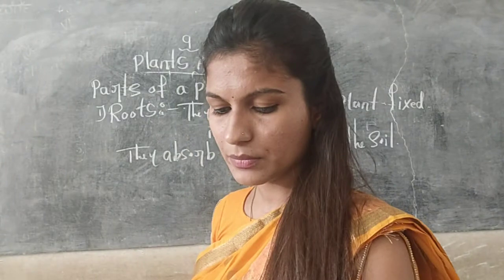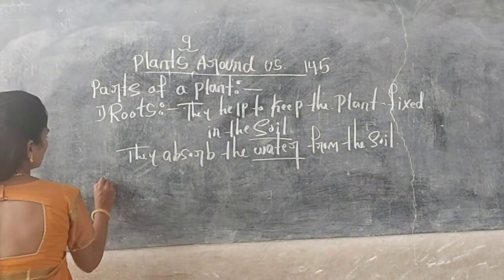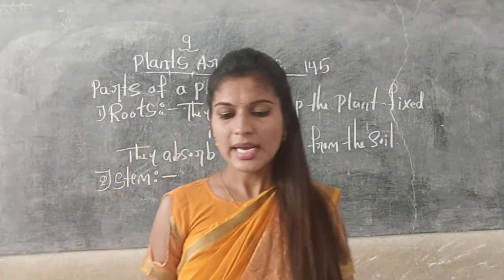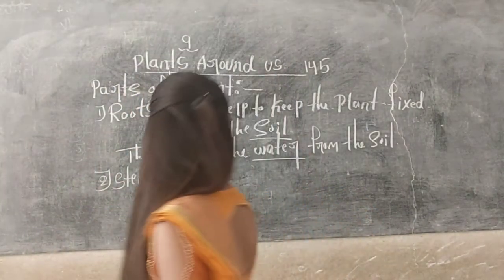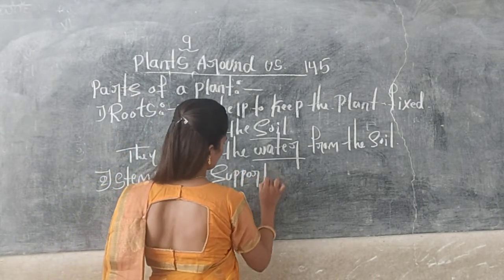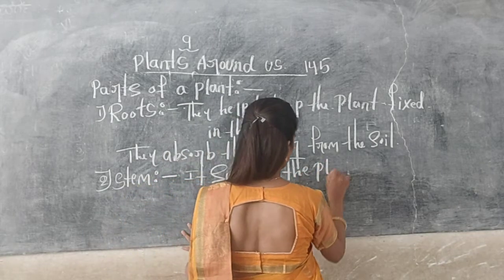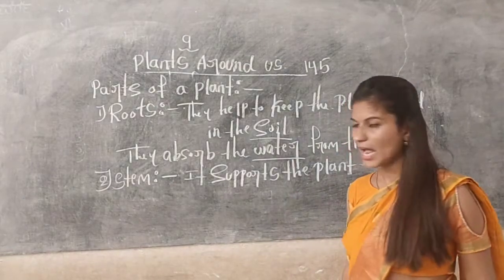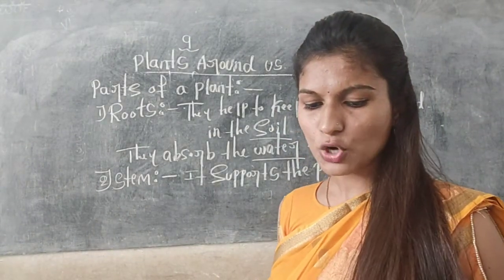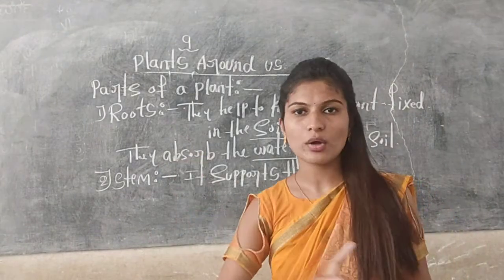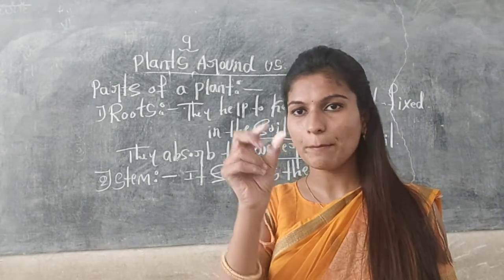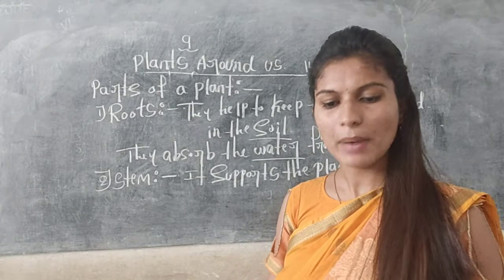The second part of the plant is the stem. What is the function of the stem? It supports the plant. Stem is the strongest and thickest part of the plant.